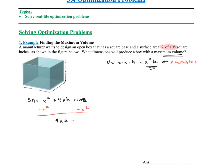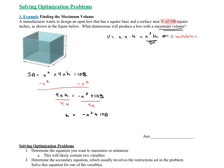That gives me 4xh equals negative x squared plus 108. I'm going to divide both sides by 4x. When I divide both sides by 4x, I get h equals negative x squared plus 108, all over 4x. Now that I've solved for h, I can go back to my volume equation and plug in this value for h. My volume equals x squared times negative x squared plus 108, all over 4x.